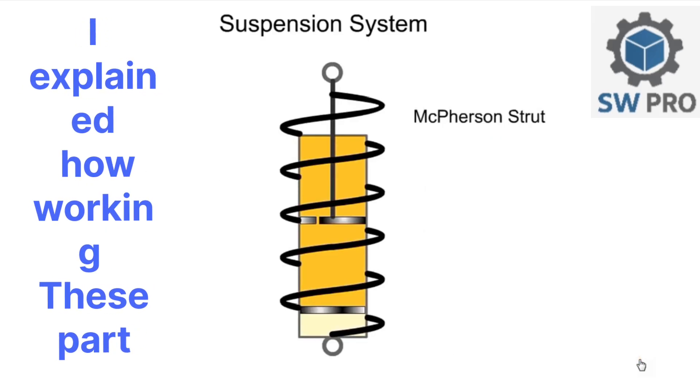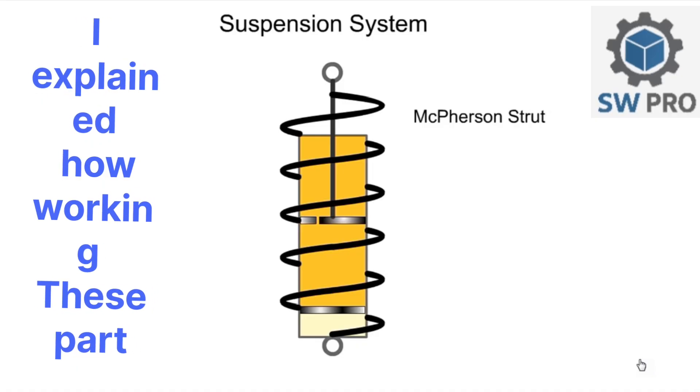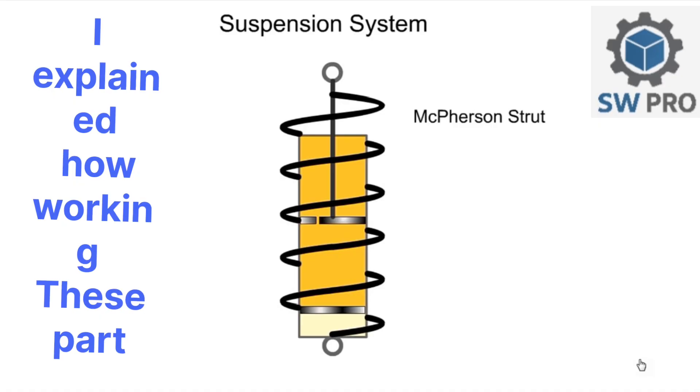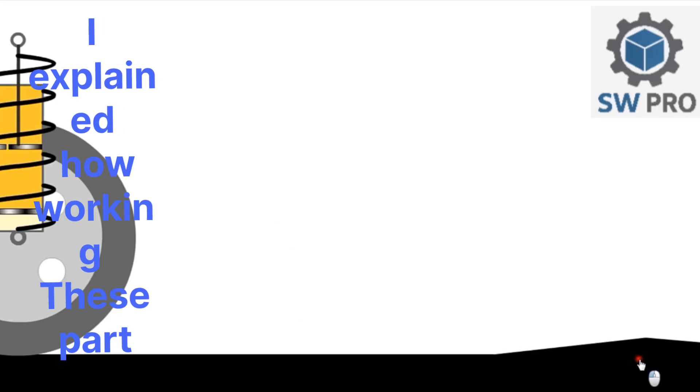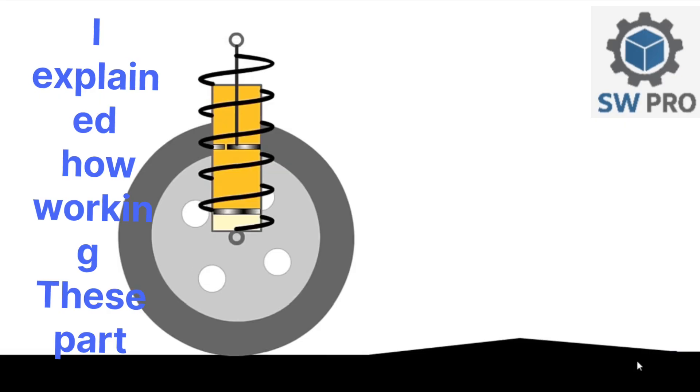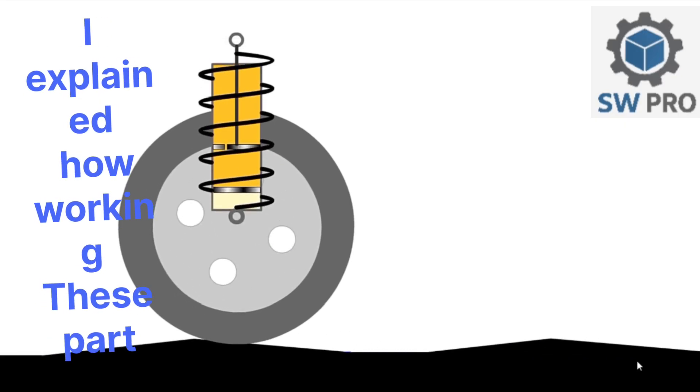A spring and damper are often combined in one unit called a McPherson strut. Here we see the McPherson strut in operation. It provides comfort for the occupants and maintains the wheel in contact with the road.